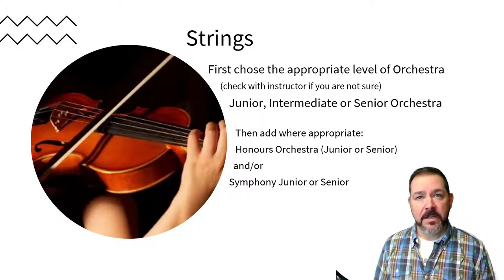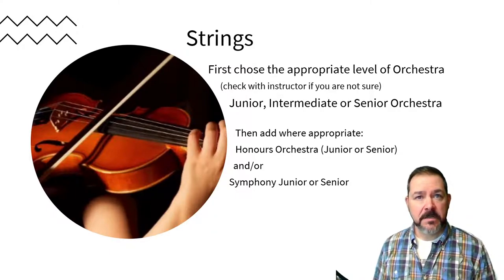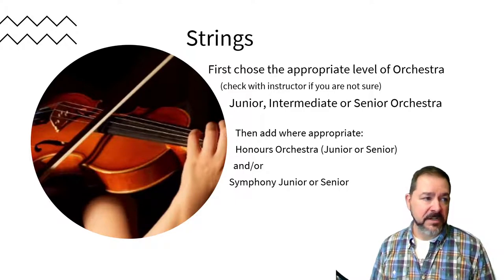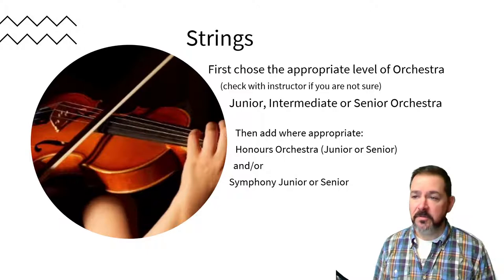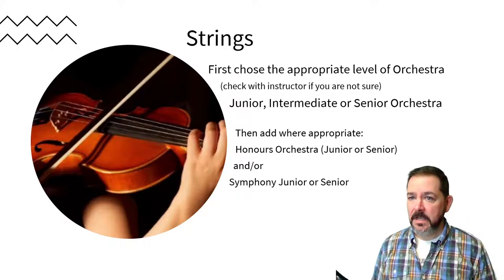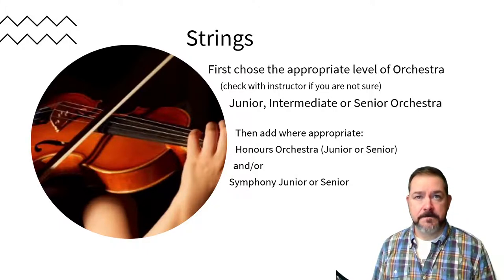In addition to orchestra, you'd take honors orchestra at junior or senior level, and/or symphony at a junior or senior level. So you could have at least two classes but up to three classes in one area, and that's common.